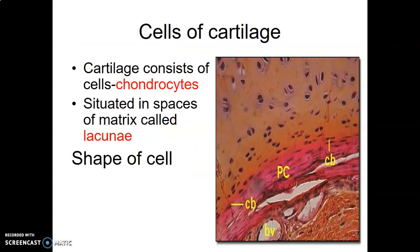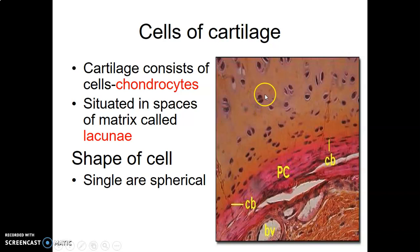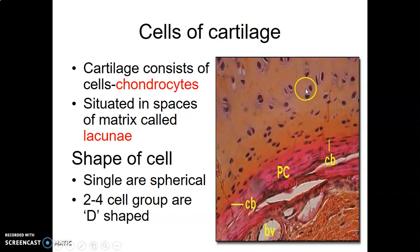The cells within cartilage — in an immature state we have chondroblasts, then they lay down matrix and rest in lacunae as chondrocytes. These spaces are the lacunae — these vacant spaces — and they contain cells, the chondrocytes. These cells are usually single and spherical. They exist singly, but you can find those that are double, or in groups of four in a D-shape.